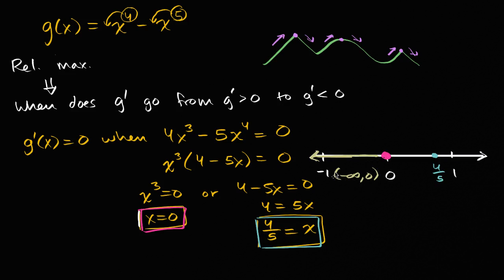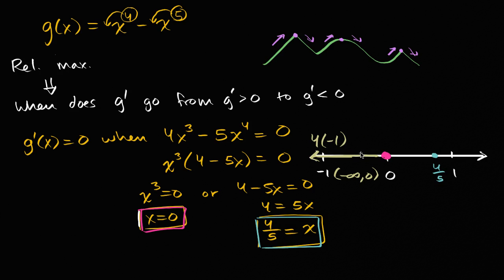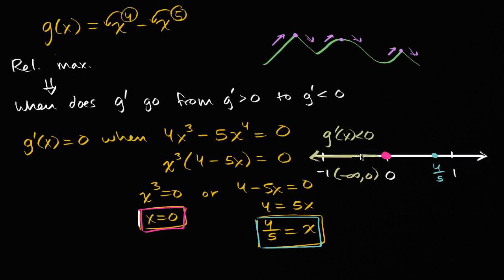For the open interval from negative infinity to zero, let's plug in x equals negative one. G prime of negative one equals four times negative one to the third, which is four times negative one, minus five times negative one to the fourth, which is one. So this is negative four minus five, which is negative nine. So g prime is less than zero over this whole interval, meaning our function is decreasing. We can't go from increasing to decreasing at x equals zero because we're already decreasing to the left of it.